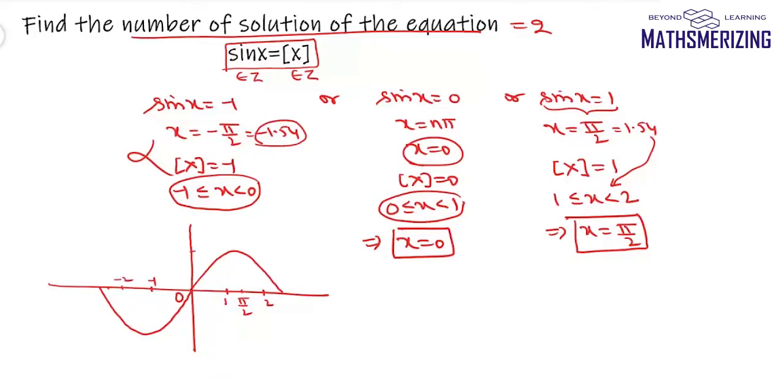I will draw the greatest integer function, so these two graphs intersect at these two points. So one of the points is x equal to zero, and the other point is x equals pi by 2. So from the graph also we can say the number of solutions to this equation is simply two.